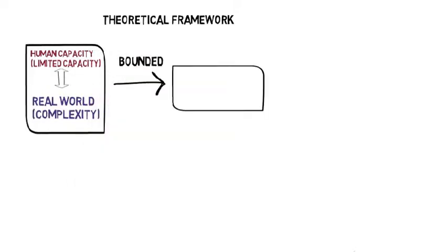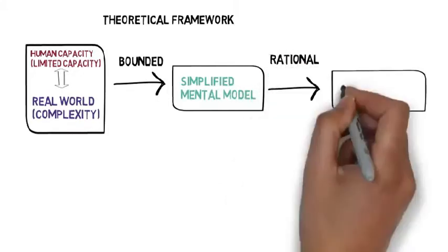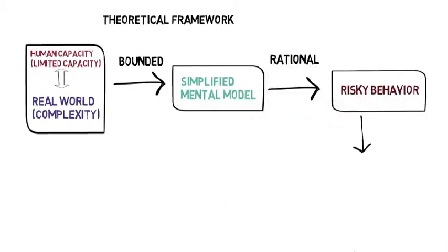The framework links every single variable which starts from limited human capacity and capacity of the real world and it ends up with speculation that causes property bubble.